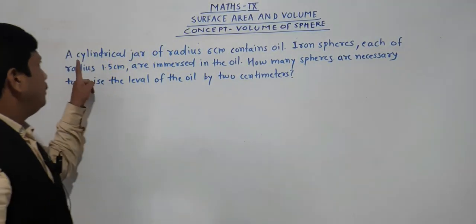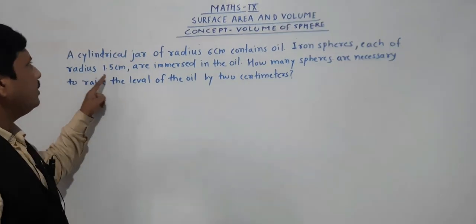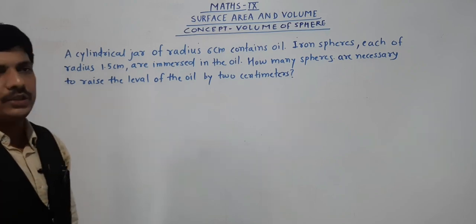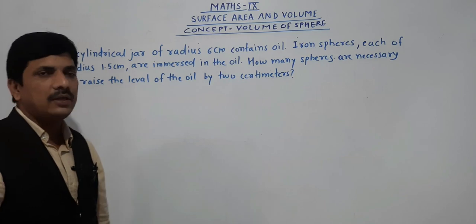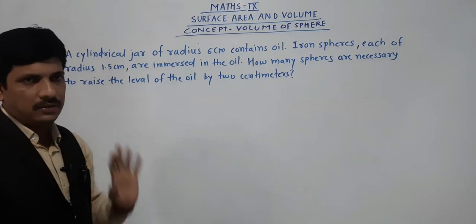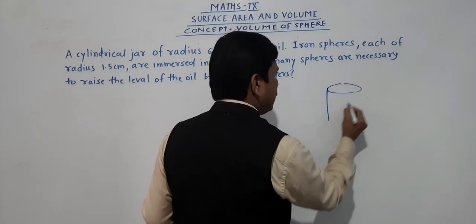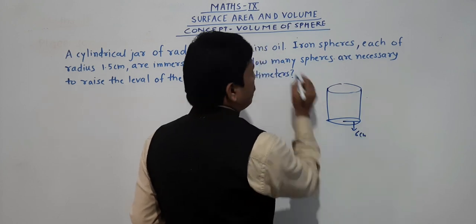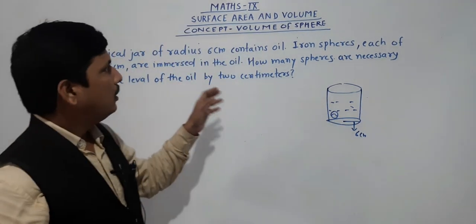Our second problem: a cylindrical jar of radius 6 centimeters contains oil. Iron spheres each of radius 1.5 centimeters are immersed in the oil. How many spheres are necessary to raise the level of the oil by 2 centimeters? Here we have to find the number of spheres. The cylindrical jar has radius 6 centimeters, and the iron spheres each have radius 1.5 centimeters.